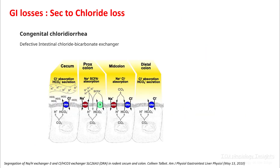Certain congenital disorders such as congenital chloride diarrhea have a defect in intestinal chloride-bicarb exchange, resulting in chloride loss and resulting metabolic alkalosis.